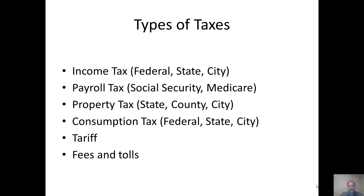Another form of taxation very common in the early US is the tariff. Tariffs have existed since the beginning of the United States, before the income tax. Initially income taxes were considered unconstitutional, and arguments over tariffs were one of the reasons South Carolina first threatened to secede from the Union. Later the Civil War was based largely on slavery, but tariffs were also an issue. Tariffs have also been blamed for exacerbating the Great Depression. Other forms of government revenue include toll roads and fees, such as a fee for your driver's license.